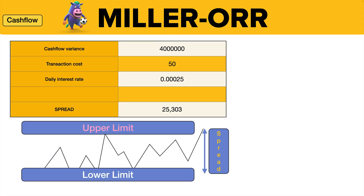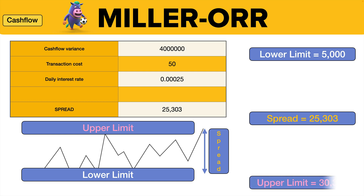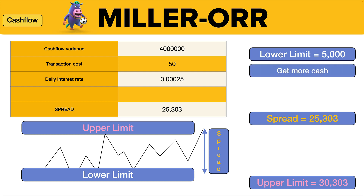So we've got our spread. If the lower limit was set at £5,000 — remember, that's the manual thing that gets put in — and the spread is £25,303, then the upper limit must be the lower limit plus the spread: £30,303. At the lower limit, we need to get more cash by either selling shares or getting it from deposits. At the upper limit, we've got too much cash, so we need to buy investments or put some money on deposit.